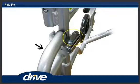Swing the footrest towards the middle of the polyfly until it locks into place. Repeat steps 5 and 6 for the other footrest.